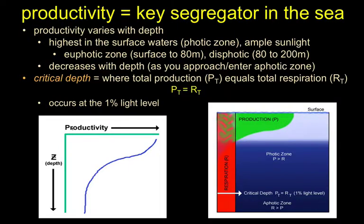Productivity is a key segregator for critters in the world's ocean, and therefore a key segregator of populations and resources. Concerns about fisheries, for example — productivity at a large scale determines where we fish. Like several other things in the ocean, productivity varies with depth. Generally speaking, the largest biomass is near the skin of the ocean, really close to the surface — in the so-called photic zone, where the light is.